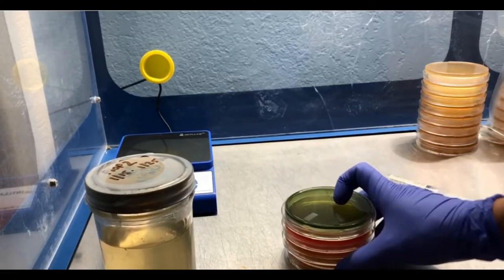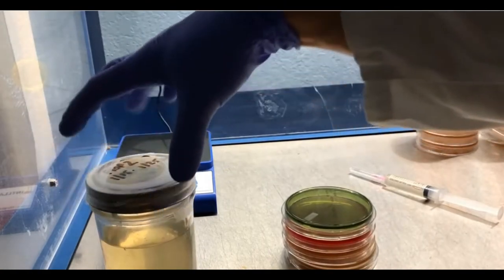Sometimes people add color to the plates via different amendments in order to see the growth better. The ratios here are for pouring 15 to 20 plates, which is usually two sleeves of petri dishes.